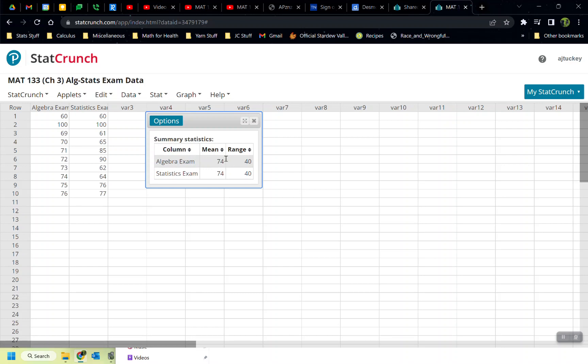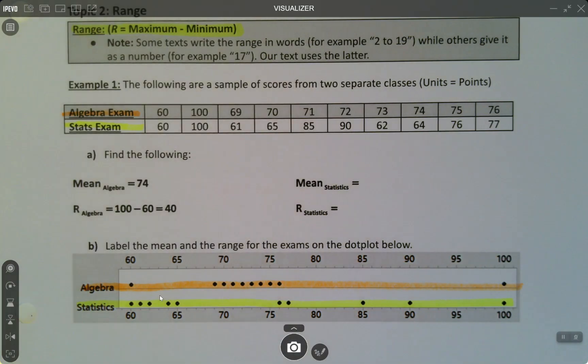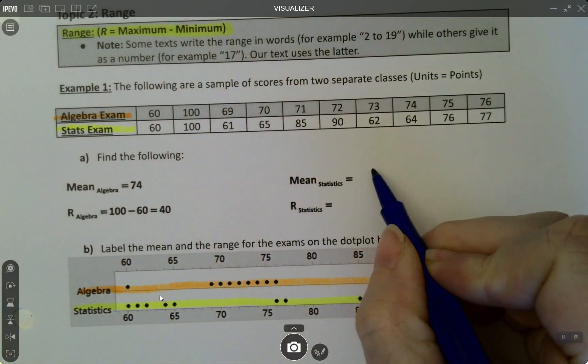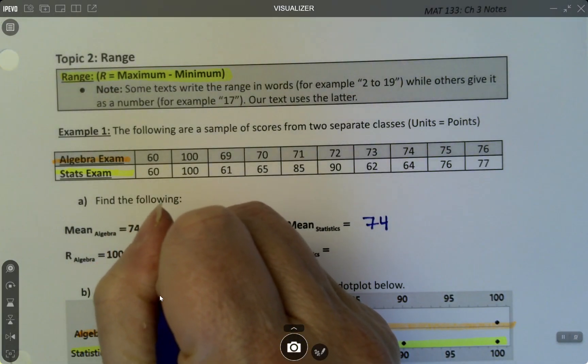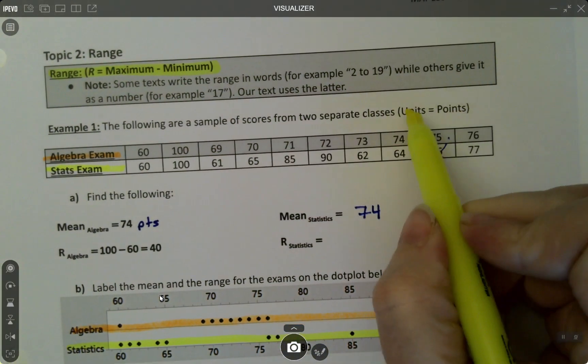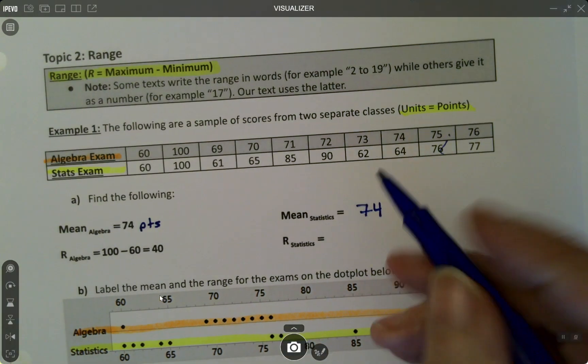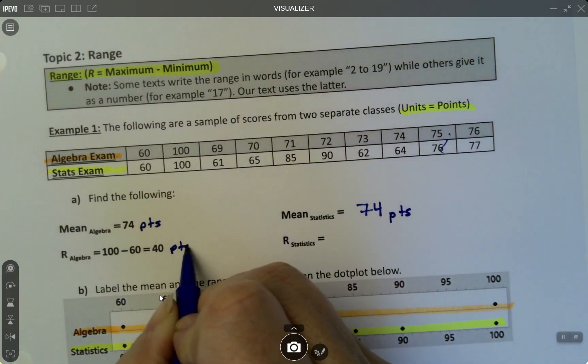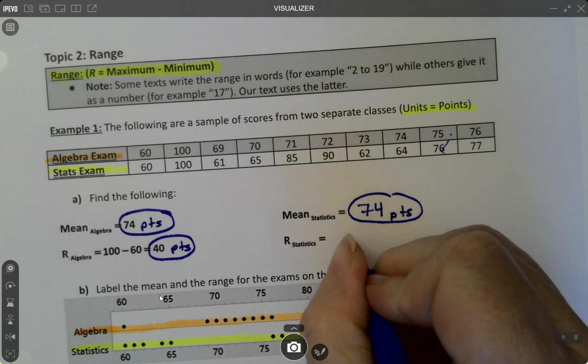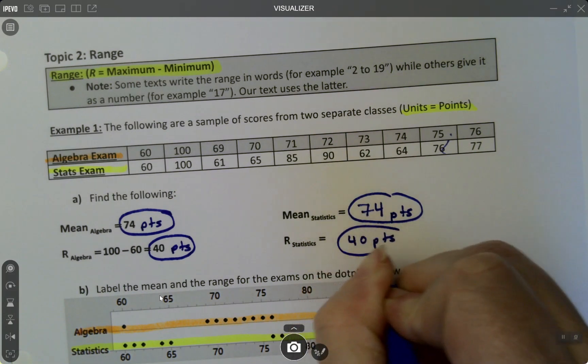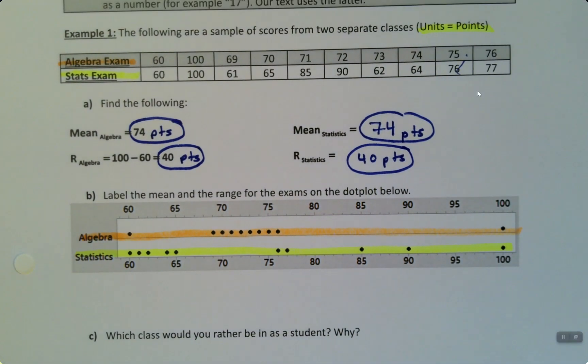And there they are. I can see that the algebra exam is indeed 74 and 40, just like is written on the paper. But now I can also see that the statistics exam is also 74 and 40. Interesting. I wonder if Alana did that on purpose. And the answer is yes. Yes, I did. So the mean is 74. By the way, the unit on this is probably points. As a matter of fact, I said right here at the top. The unit is points. So if you want to put PTS to stand for points after both of these, 40 points, right? So there's the range. There's the mean. And the range is also 40 points.